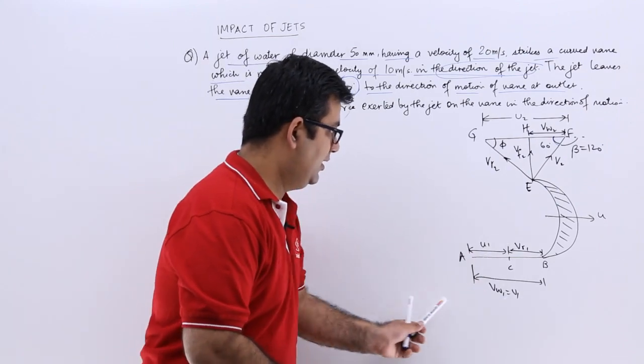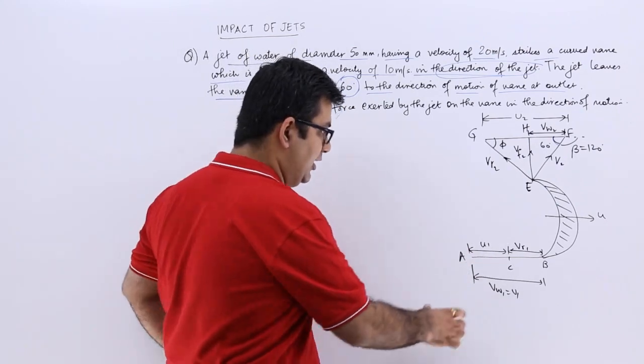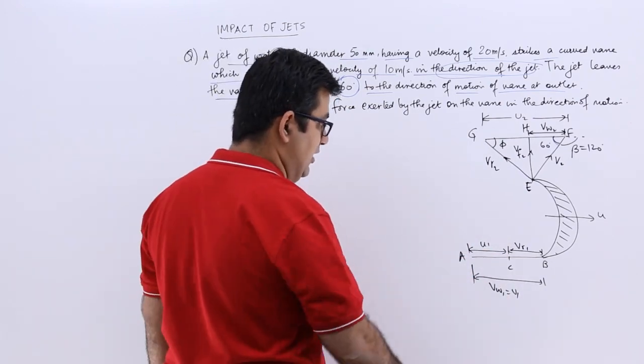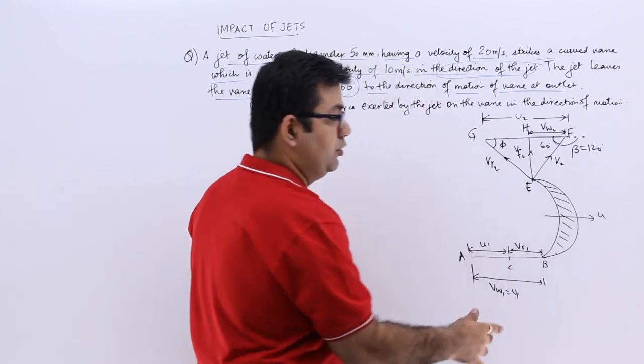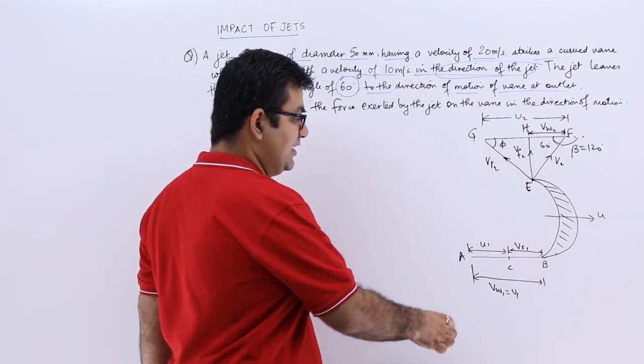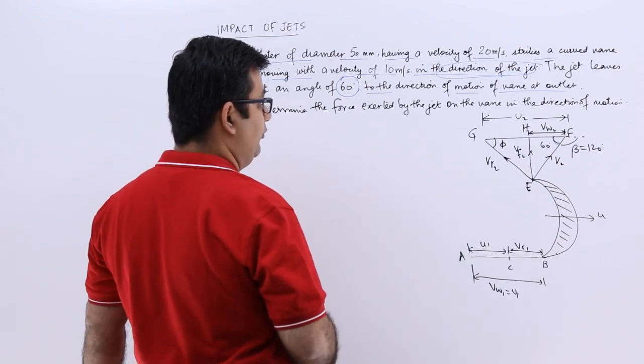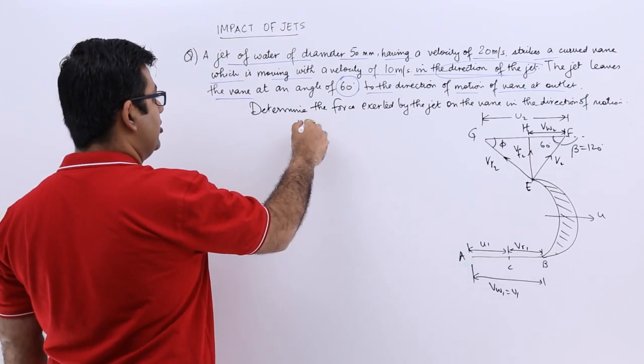So you can draw an IVT and see these points and then you can cut off the points corresponding to that. So AB is v1 which is equal to the whirl velocity. AC is u1 and CB is vr1. So if you write down the diameter, the diameter is how much?